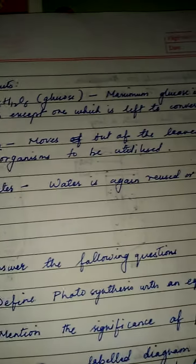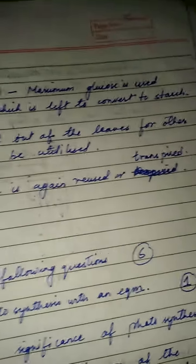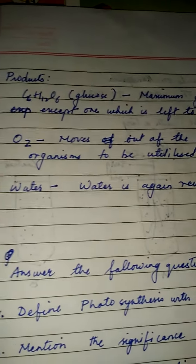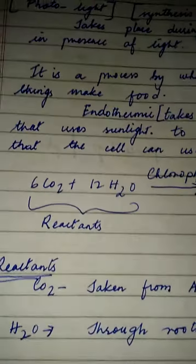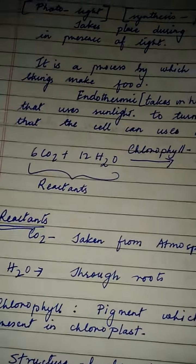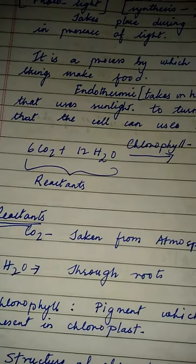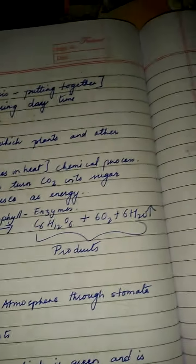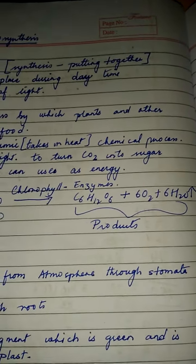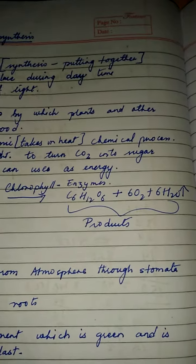Water is again reused or transpired. So to summarize the two important things we learned today: the reactants are carbon dioxide and water, and the products are glucose, oxygen, and water.